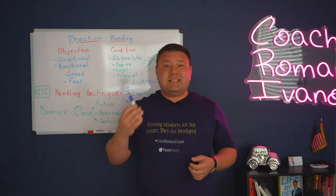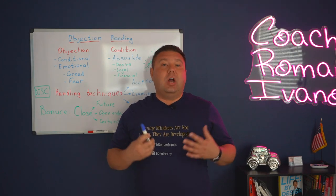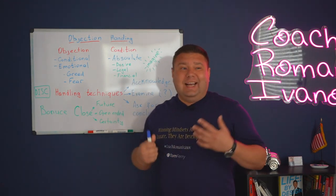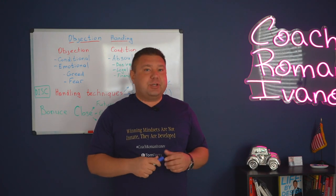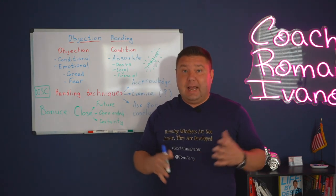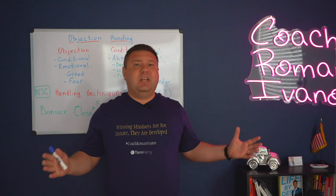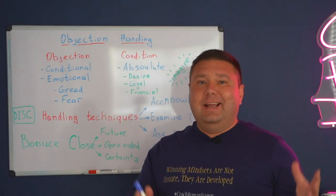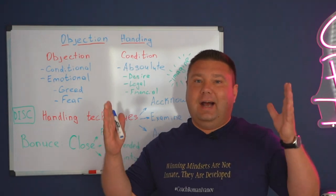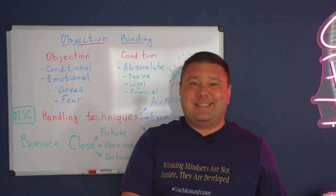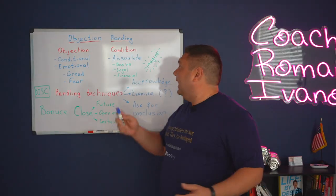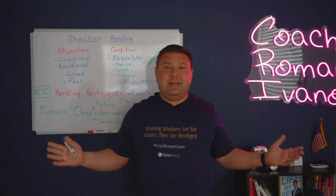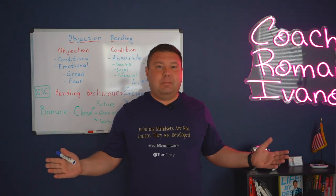A condition must be absolute — we cannot overcome a condition. A desire could be an option for a condition. Let's say I just bought a house, I have no desire to buy another one. Or I sold the house and I'm happy renting. I spent all my money — I just lost it all in the casino. I don't have money. That could be a financial condition. I don't have money to buy. There is nothing you can do about it.